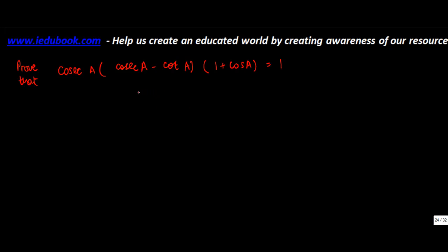But let's give it a try. So the thing that you can do here is: what is cosec A? It's basically 1 upon sine A into 1 upon sine A minus cot A, which is cos A upon sine A, into 1 plus cos A.